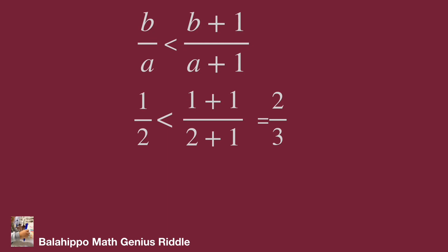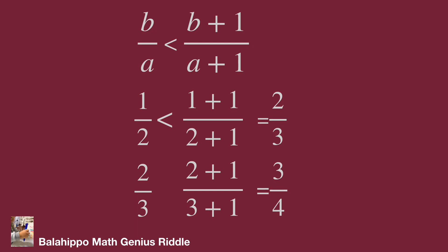Another example. Let b equal to two and a equal to three. Then b over a equals two over three. b plus one equals two plus one equals three, and a plus one equals three plus one equals four. So the fraction b plus one over a plus one equals three over four. Comparing these two fractions again, three over four and two over three, we find three over four is larger than two over three.